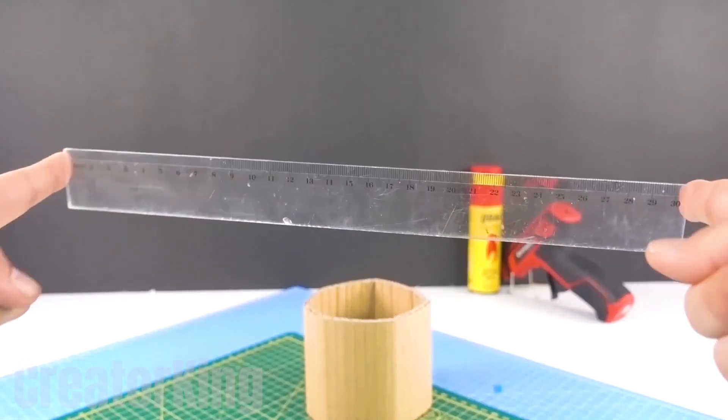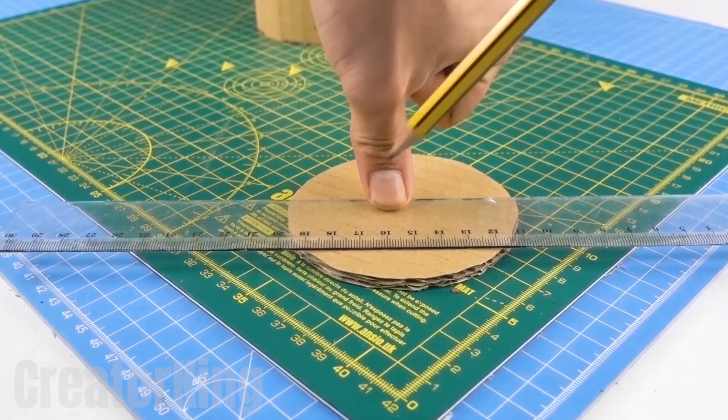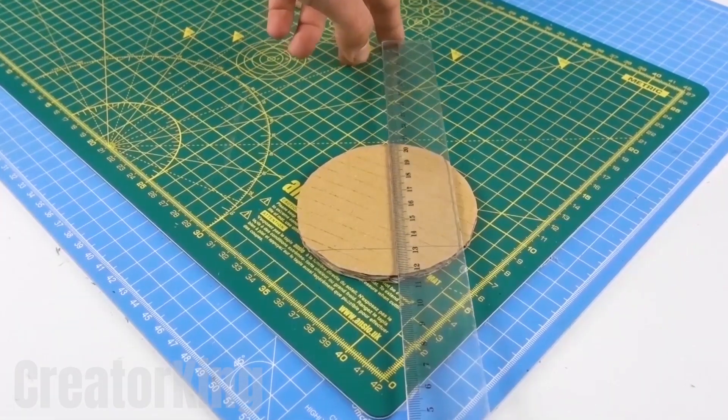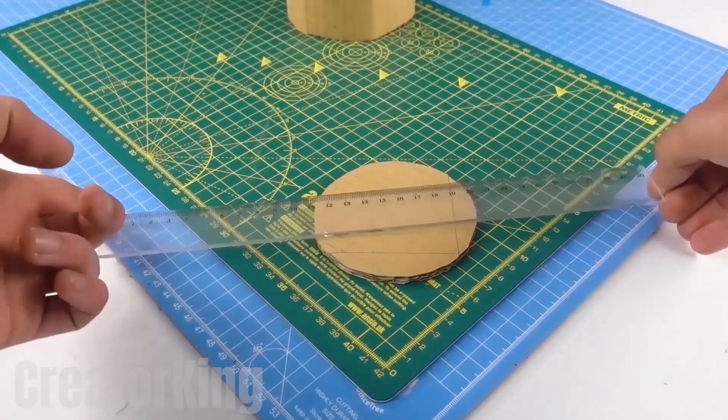Dust off that ruler you haven't used since elementary school. We'll need it to make straight lines around the cardboard circle. Simply turn and align the ruler with the end of the previously drawn line, so that the rectangle is as perfect as possible.